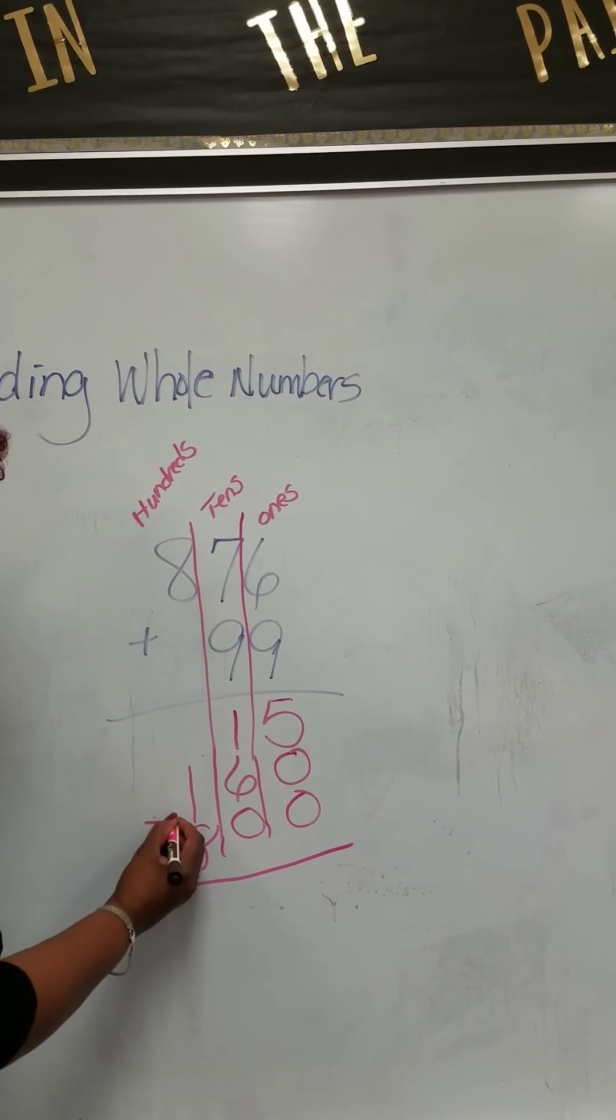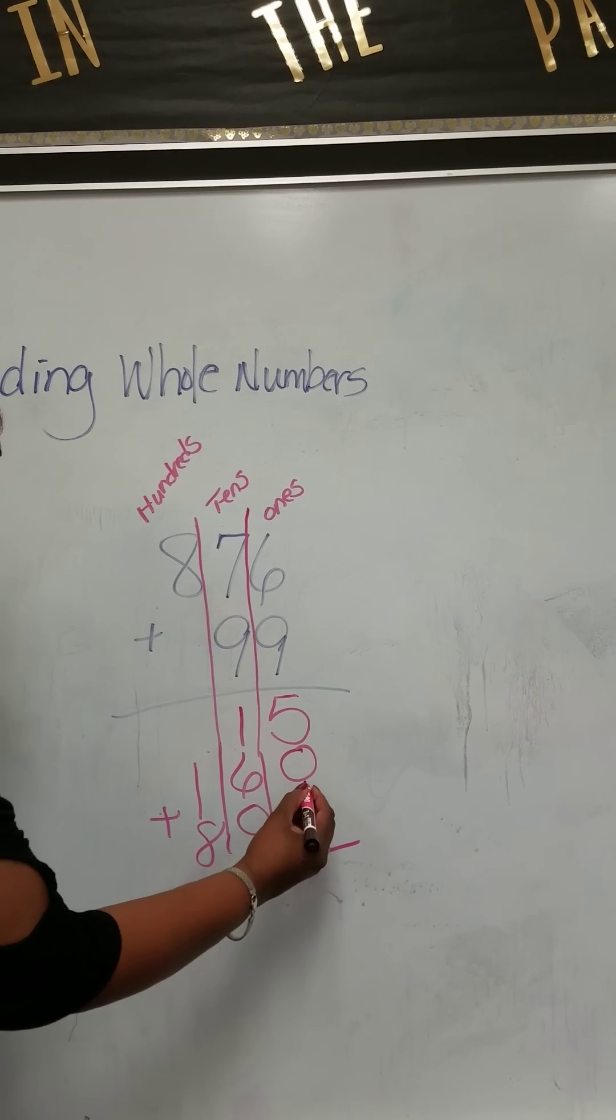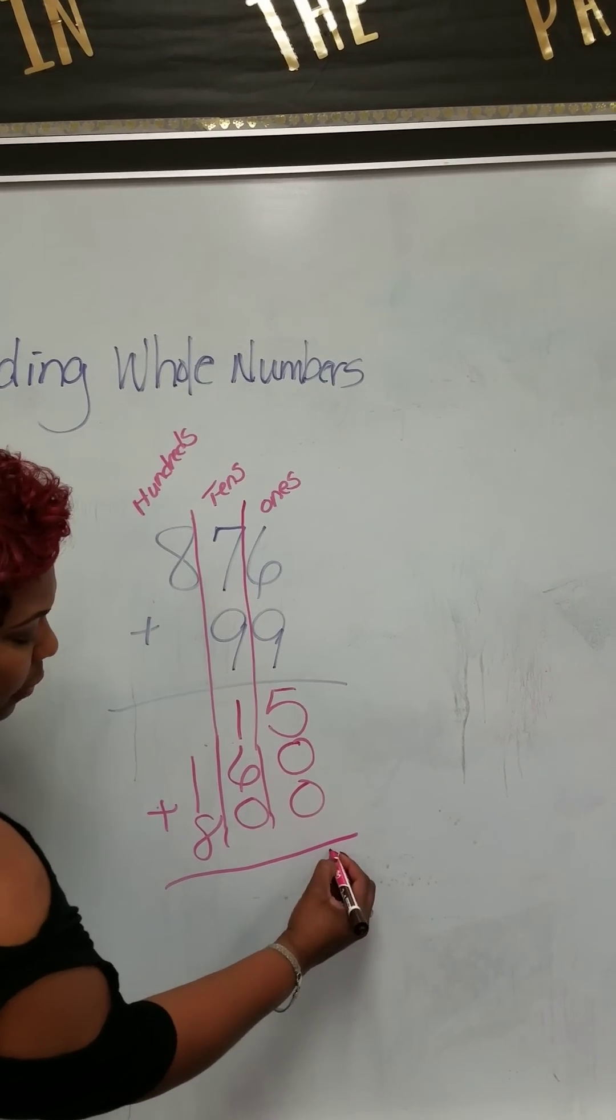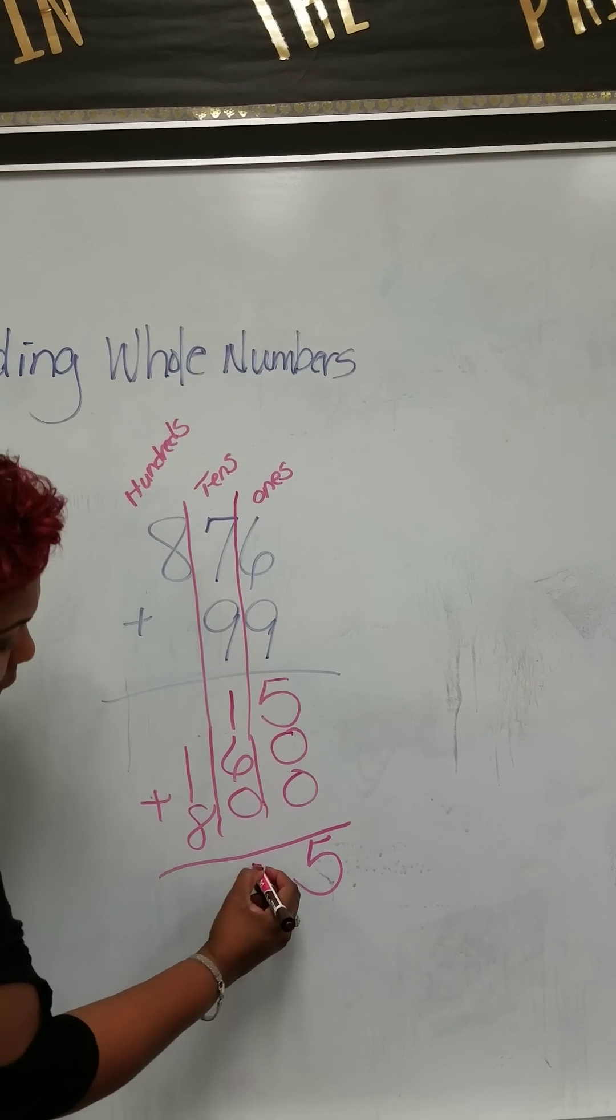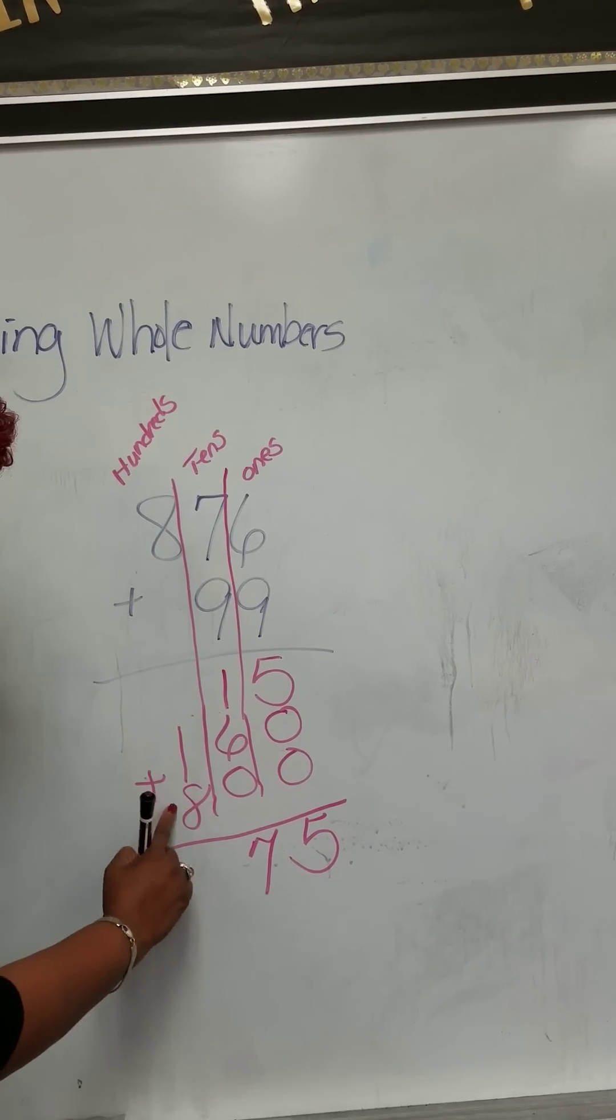Then we're going to add all of those together. Five plus zero plus zero is five. One plus six plus zero is seven. And one plus eight is nine.